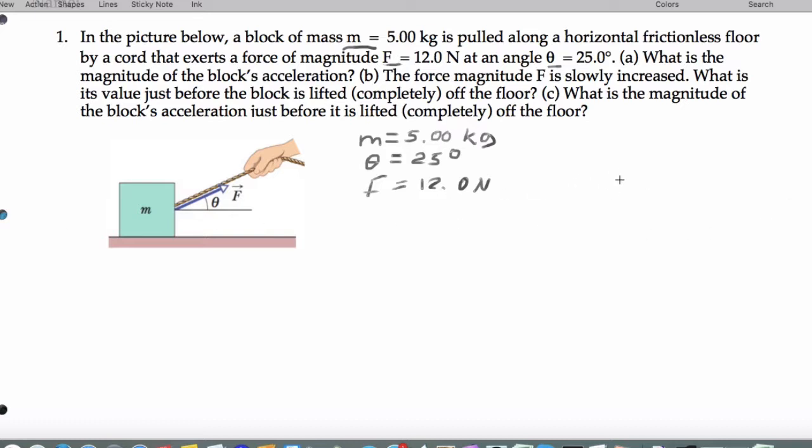From the perspective we want to work from in AP, I have the normal on little m due to the floor, the weight of little m due to the earth, and the F on M because it's being pulled. I can split these into two components.